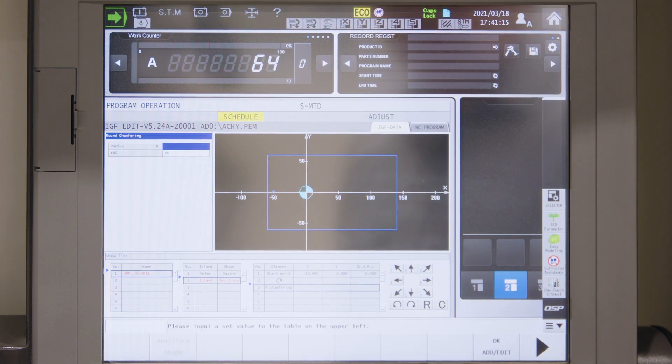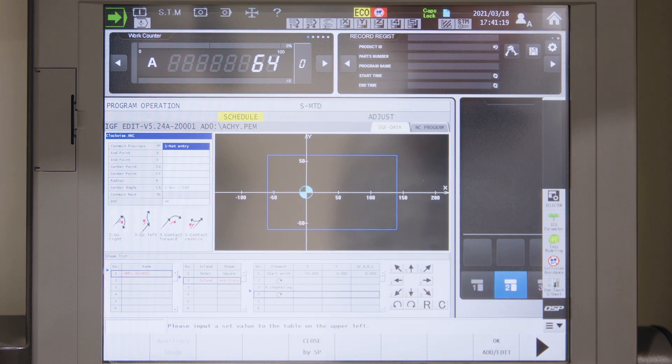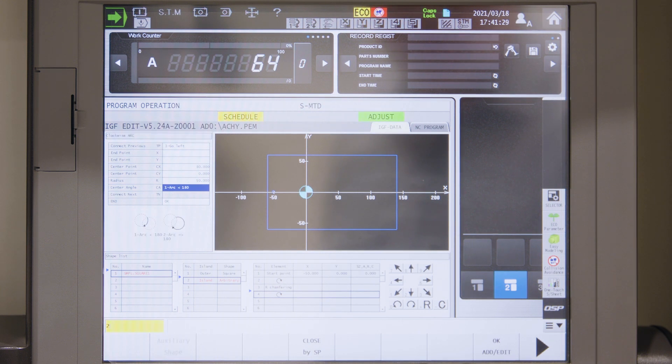I will do a rounding of 20 millimeter. Then the next circle. This circle is turning left from the previous element with unknown endpoint with a center point of 80 and zero. A radius of 50 and a circle bigger than 180 degrees.